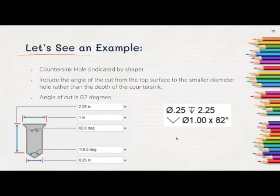This includes the angle of the cut from the top surface to the smaller diameter hole rather than the depth of the countersink. The angle of the cut is 82 degrees. So this hole note reads that we have an inner diameter of .25 inches with a depth of 2.25, that it's a countersink hole, and that the countersink has a diameter of 1 inch at 82 degrees.